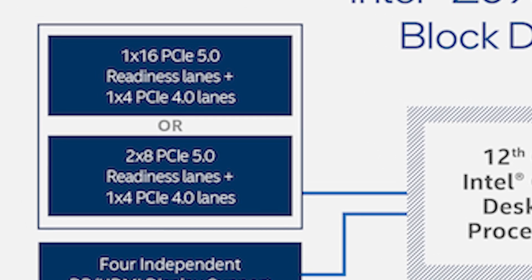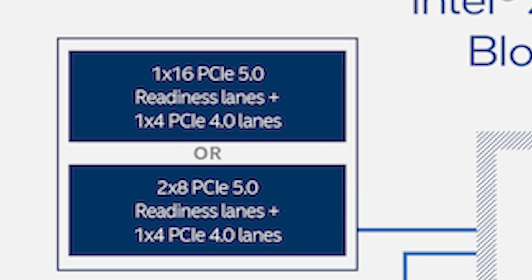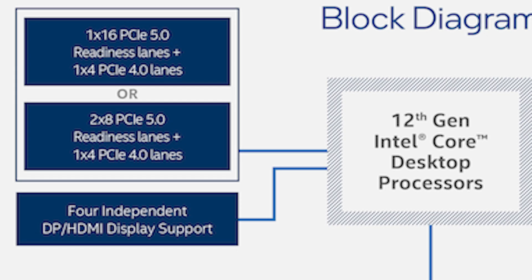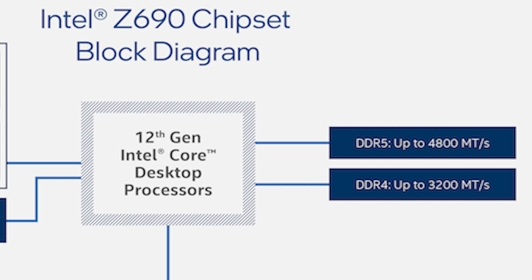First, I'm going to go over Intel's Z690 chipset block diagram. If you look over onto the left screen, you can see that the processor is powering a PCI Express 5.0 lane by 16, or it can power two 8x PCIe 5.0 lanes. It does have four independent DP HDMI displays. The biggest difference to pay attention to here is the memory: DDR5 is up to 4,800 megatransfers per second, and DDR4 is up to 3,200 megatransfers per second.